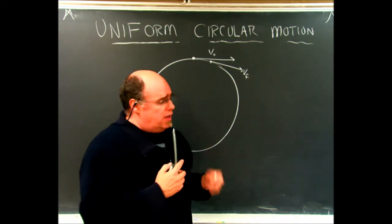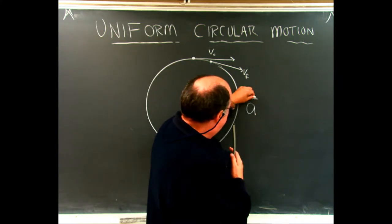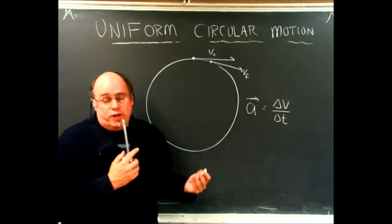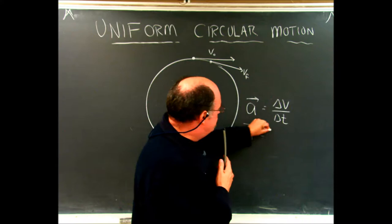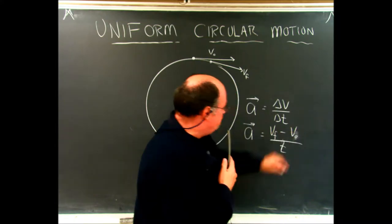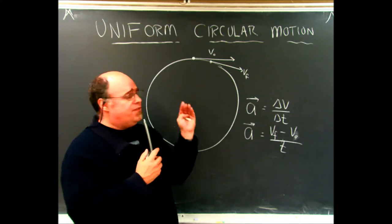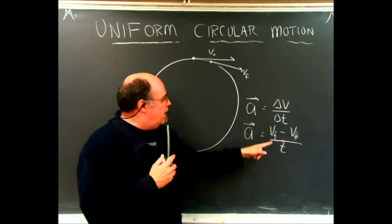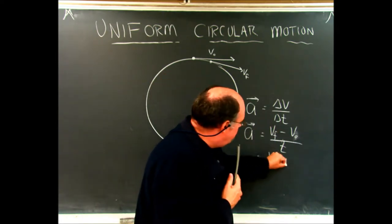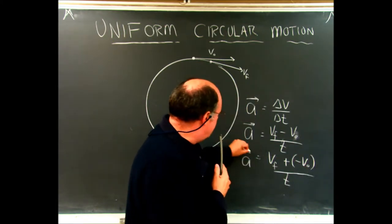When we talk about acceleration, it's defined as the change in velocity over the change in time. So acceleration equals v-final minus v-initial over time. We could do this graphically: velocity-final plus a negative velocity-initial over time. I can draw the final velocity first, then draw the negative of the initial velocity — change the arrowhead — and see what happens going tip to tail.